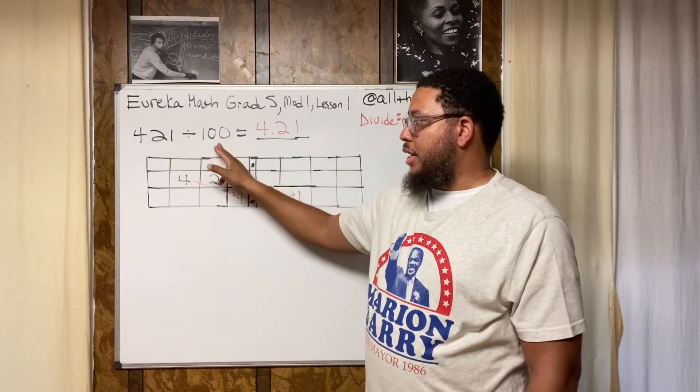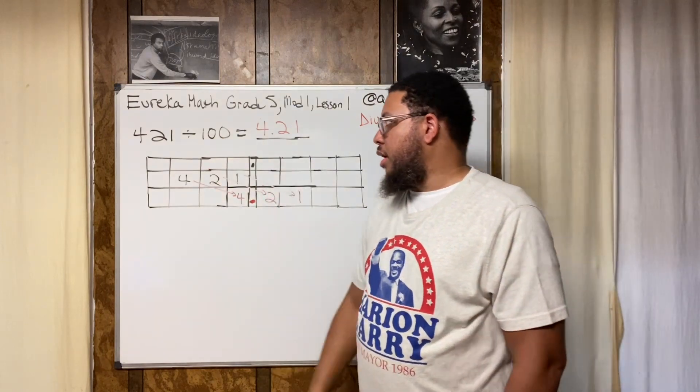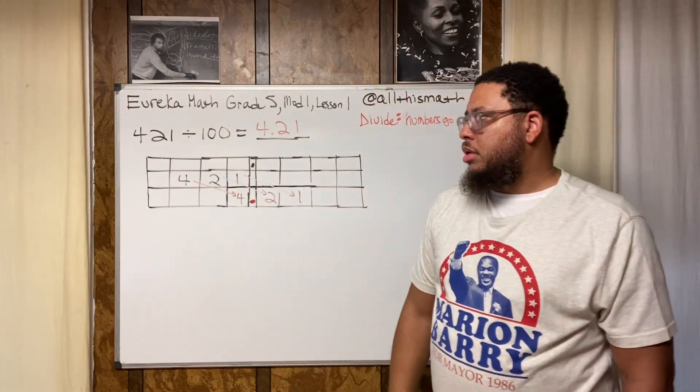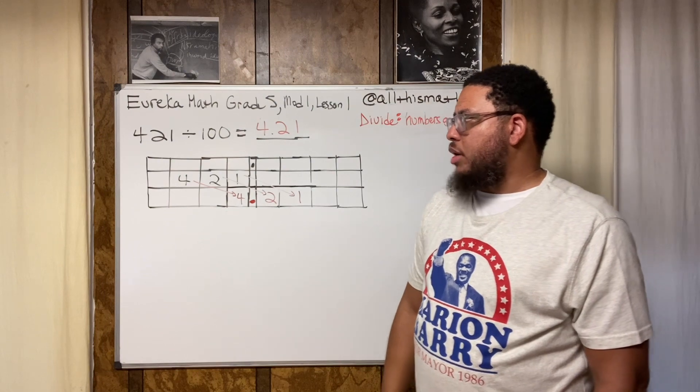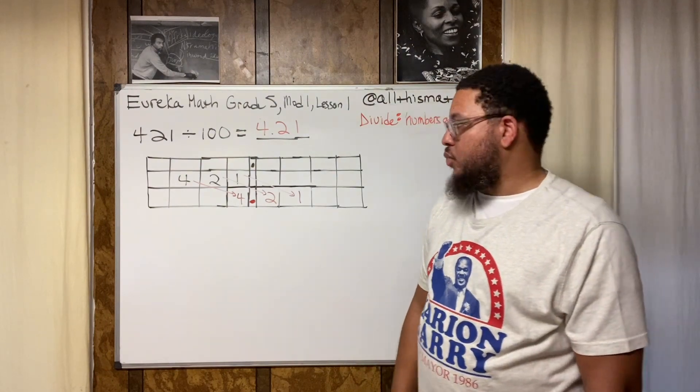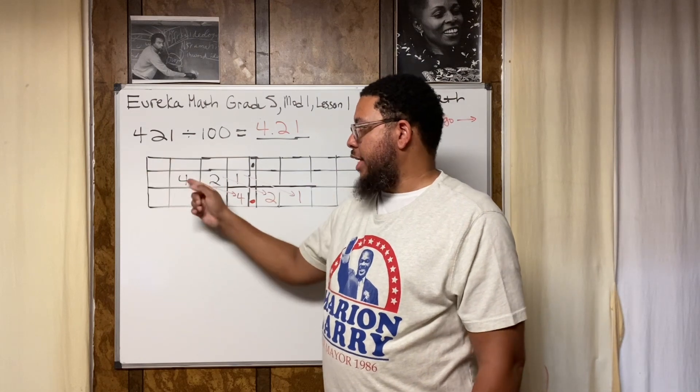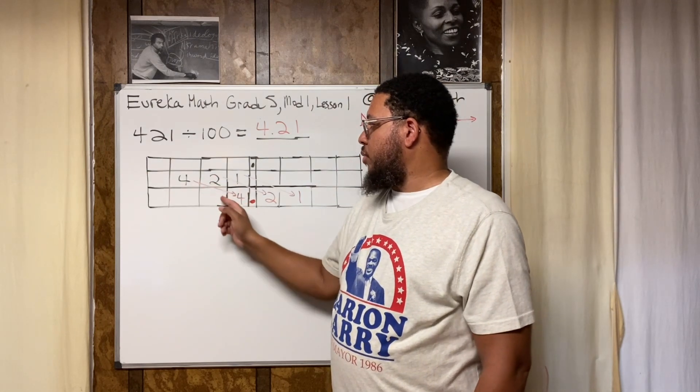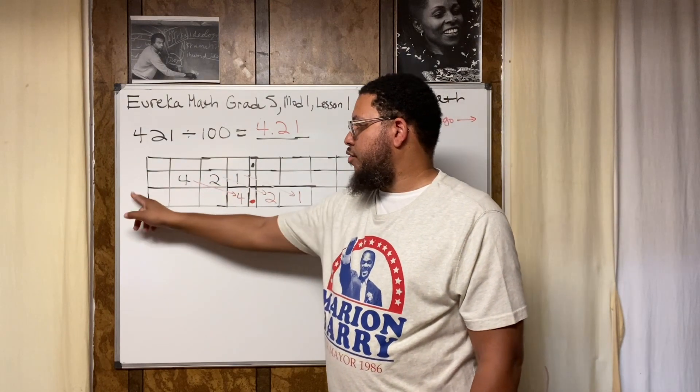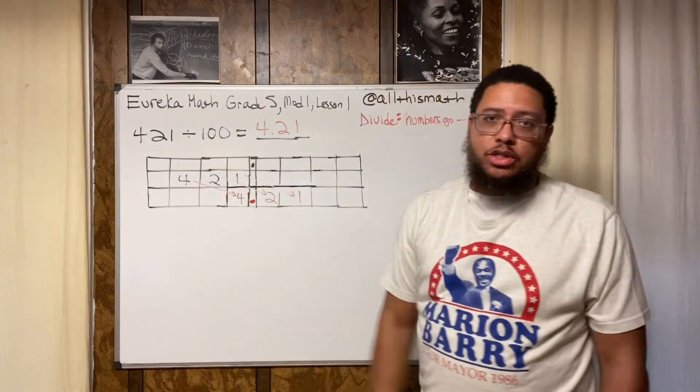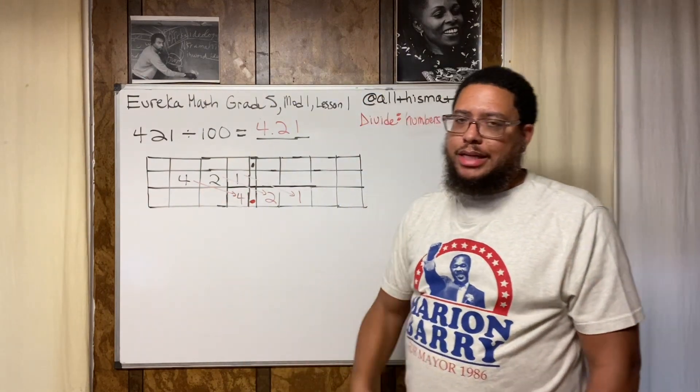If this was a multiplication problem then the digits will move to the left. If we were multiplying by a hundred then the number would become 42,100 because we would slide these numbers. You would have two zeros here and here and then you'd have four two one, 42,100. Basically just attach two zeros, that's another shortcut that you'll figure out as time goes on.